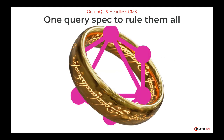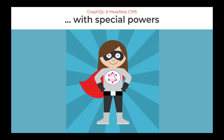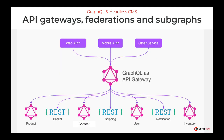This positions GraphQL to be one query language to rule them all. On top of its query capabilities, GraphQL comes with some special powers. One of the most powerful is its ability to support API gateways, federations, or subgraphs. Because of its graph-oriented nature and discoverability support, you can layer one graph upon another and combine subgraphs into a single graph. This means you can have many GraphQL implementations all exposed as one integrated API.